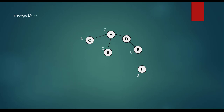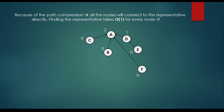Then we merge A with F. We set F to point to A. We don't need to update rank parameters because they differ before the merge. We have managed to construct our disjoint sets. Because of path compression, all nodes connect to the representatives directly, so finding a representative takes O(1) constant time complexity for every node.